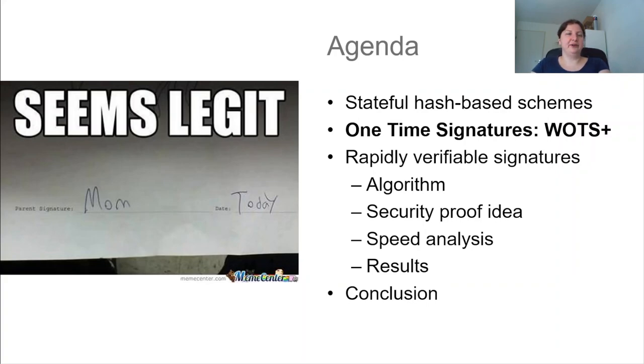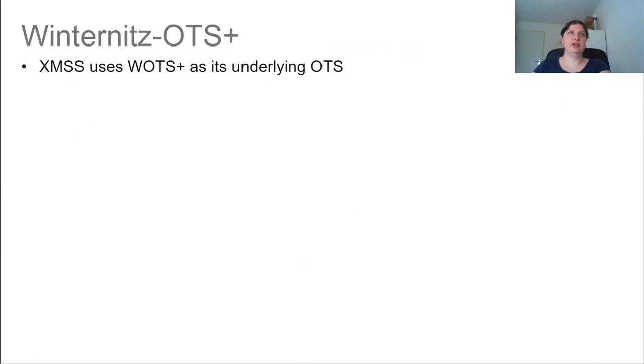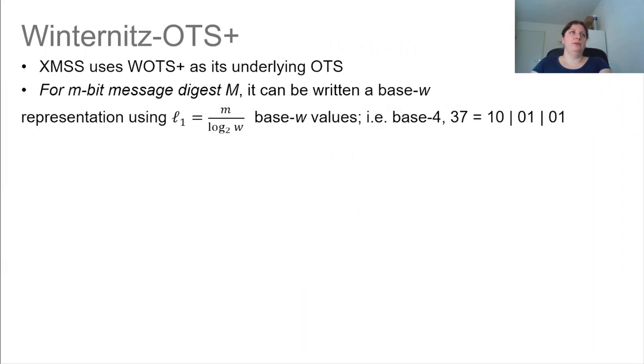So after the grand scheme of things, we move to these one-time signatures. So how do Winternitz one-time signatures actually work? Well, if we have a m-bit message digest M of a certain message that needs to be signed, the observation is you can actually rewrite it in a base W representation. So we take the m bits and split them up into L1 chunks of size W.